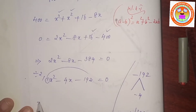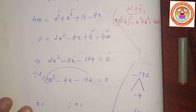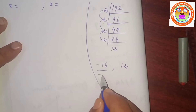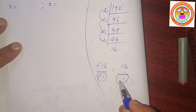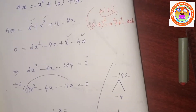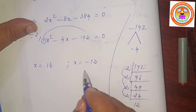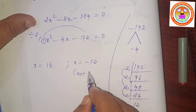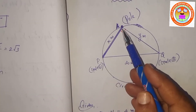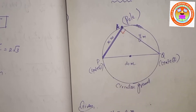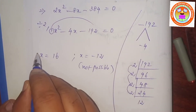Factoring the quadratic: the coefficient of x squared is 1. Changing the sign, we write minus 1 in the denominator. The values are x equals 16 and x equals minus 12. Since x represents a distance, distance cannot be negative. Therefore x equals minus 12 is not possible, so x equals 16.